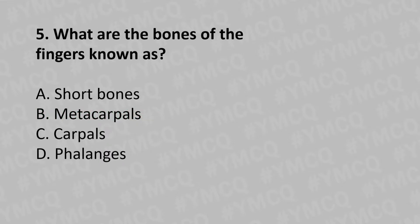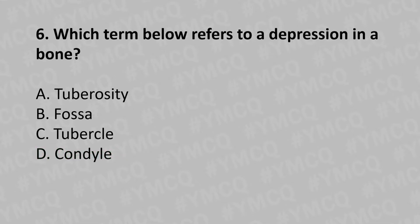Moving to our fifth question: What are the bones of the fingers known as? Option A: short bones, Option B: metacarpals, Option C: carpals, Option D: phalanges. The answer is Option D: phalanges.